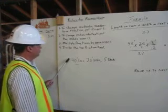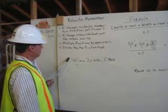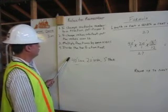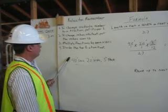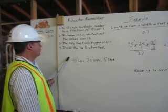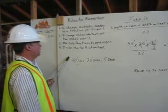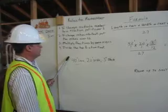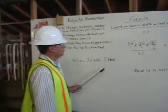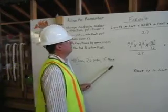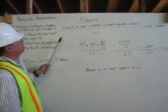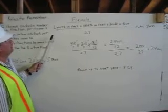This is the problem we have. We have to pour a slab of concrete that is 40 feet long by 20 feet wide and 3 inches thick. To figure out how much concrete we need, we have to apply the cubic yard formula.